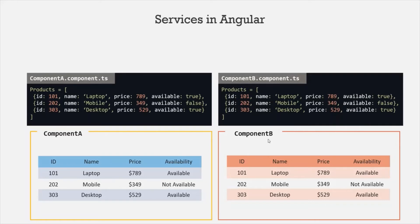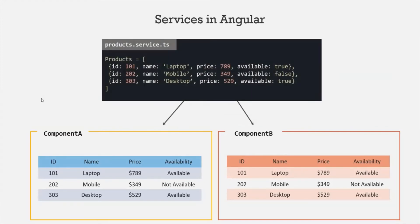The product list is going to be the same for the entire application — it is not going to be different for component A and component B. And if we have other components also in our application which need this product list, then for those components also, we will have to create this product list in the component class. Again, we are violating the DRY principle here. So what we can do is, we can move this products array inside a service class, and all the components which need to use this products array can get it from that service class. In this way, we don't have to create this products array for each and every component, and a service in Angular provides reusability of the code.